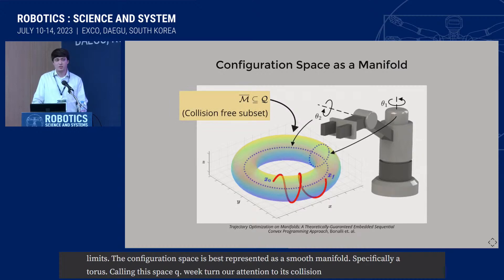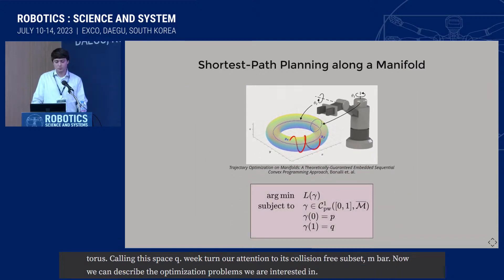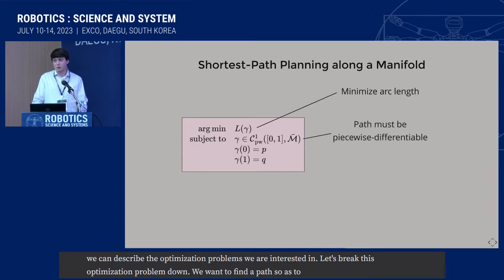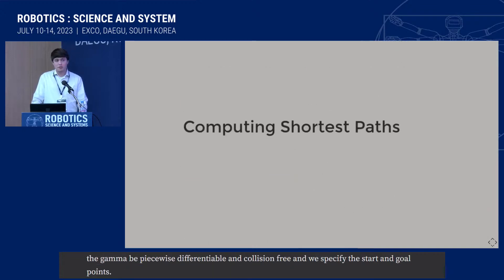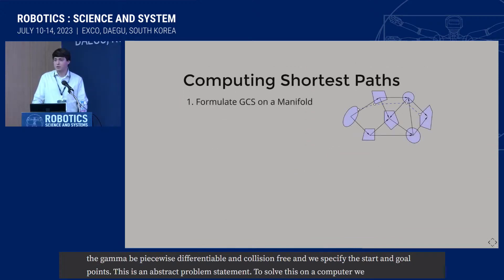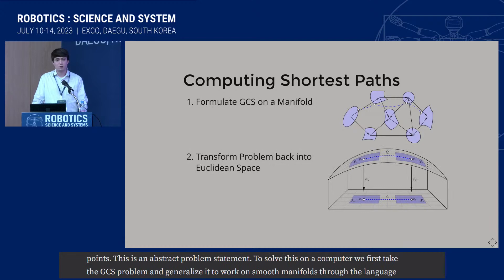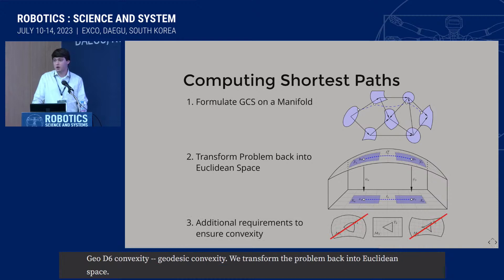We can describe the general form of optimization problems that we're interested in. We want to find a path gamma so as to minimize its arc length. We require that gamma be piecewise differentiable and collision-free, and we specify the start and the goal points. To solve this on a computer, we first take the original GCS problem and generalize it to work on smooth manifolds through the language of geodesic convexity. Then, we describe a transformation procedure to move all of the problem data back into Euclidean space, yielding a GCS-style problem. Finally, we add an additional requirement on the underlying curvature of the space to ensure this resulting problem is indeed convex.